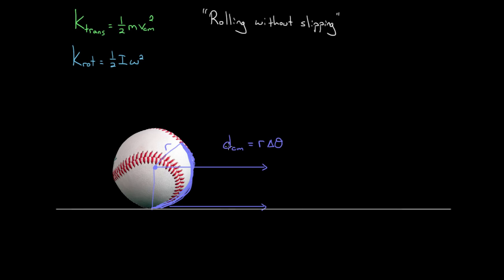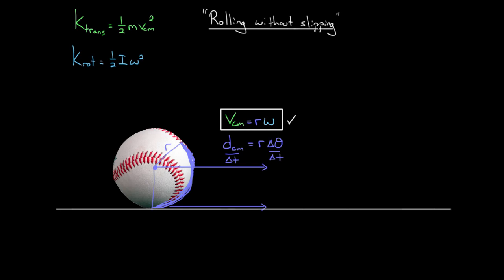Why do we care that the distance the center of mass moves equals the arc length? We can divide both sides by the time that took. On the left we get the distance the center of mass moved over time — that's just the speed of the center of mass. On the right we get radius times delta-theta over delta-t, which is just the angular speed. So this shows that the speed of the center of mass equals r times omega — and this is important to commit to memory. When a problem says something is rolling without slipping, that's code for v = rω, where v is the center of mass speed and omega is the angular speed about the center of mass.